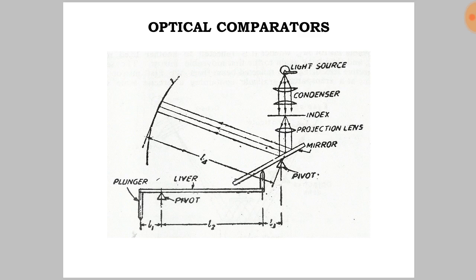The construction of the optical optimeter includes plunger, pivot, lever, mirror, projection lens, index, condenser, and light source.